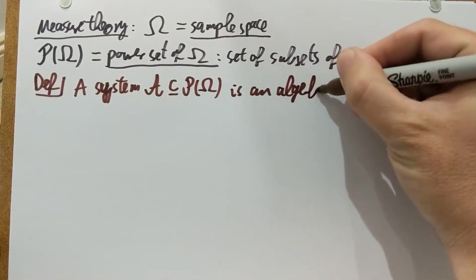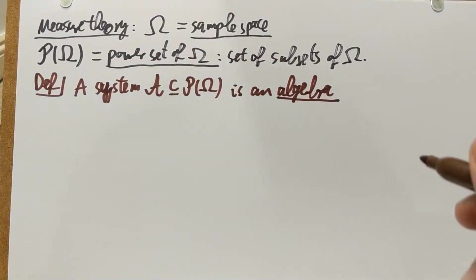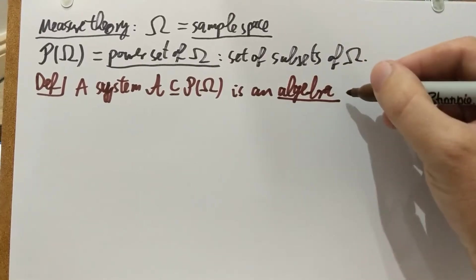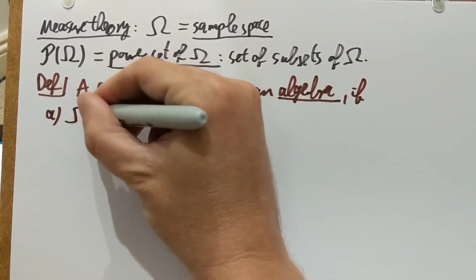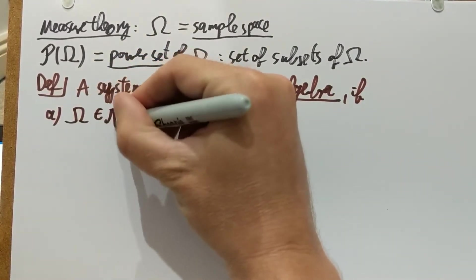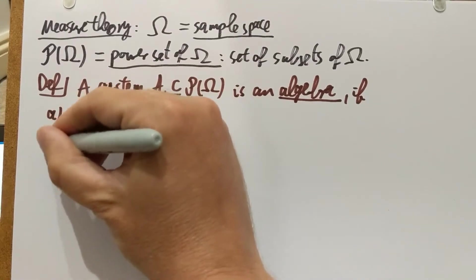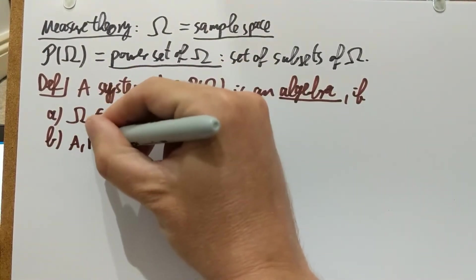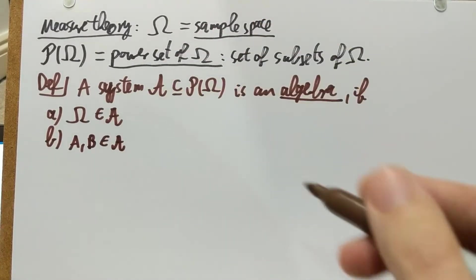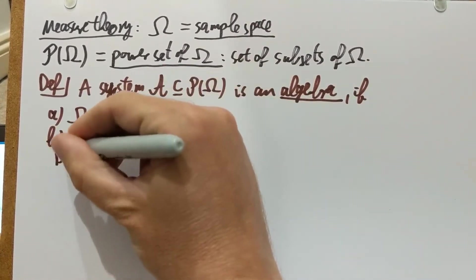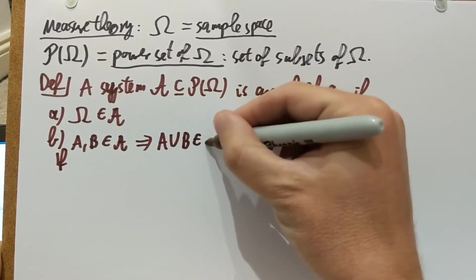This is not the algebra which you learn about in an algebra unit; this is a set-theoretic or measure-theoretic algebra. If the following is true: first, omega itself, which is considered as a subset of omega, is a member of this family A. Second, if you have two members A and B in this family of subsets — A and B are subsets of omega which belong to this family A — then it follows that the union of these two is also in A.